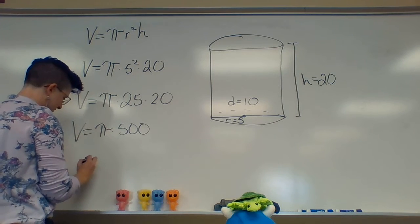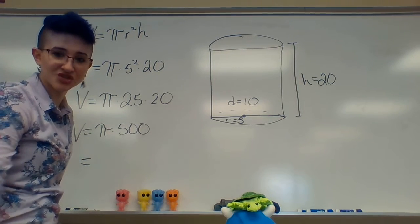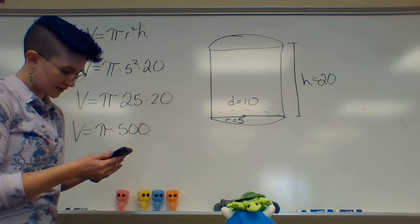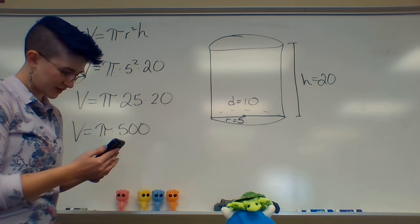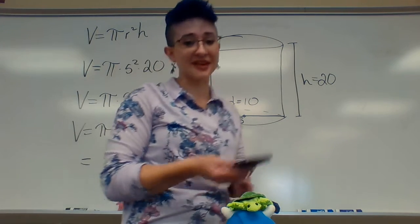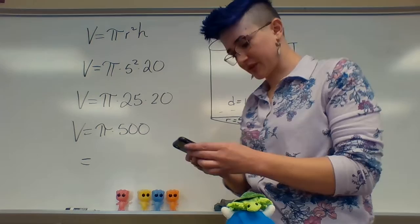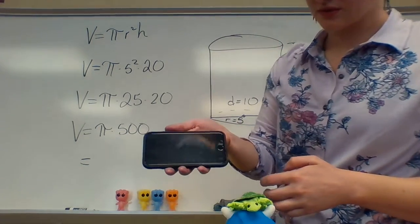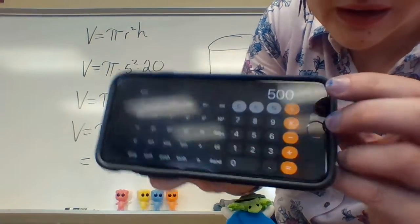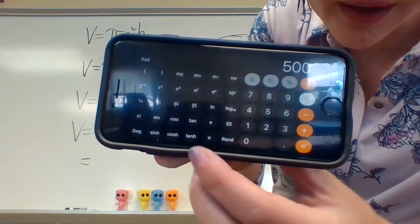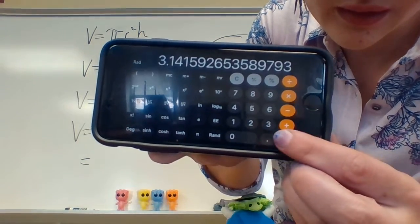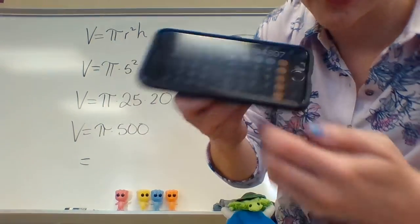Then we do 500 times pi. This is very important. You can't just write pi on there, otherwise they'll know you're cheating. So you have to multiply by pi. So take a calculator, preferably out of sight of anyone that's judging, because they'll know what you're doing. Turn it sideways. You are going to multiply by pi equals 1,570.